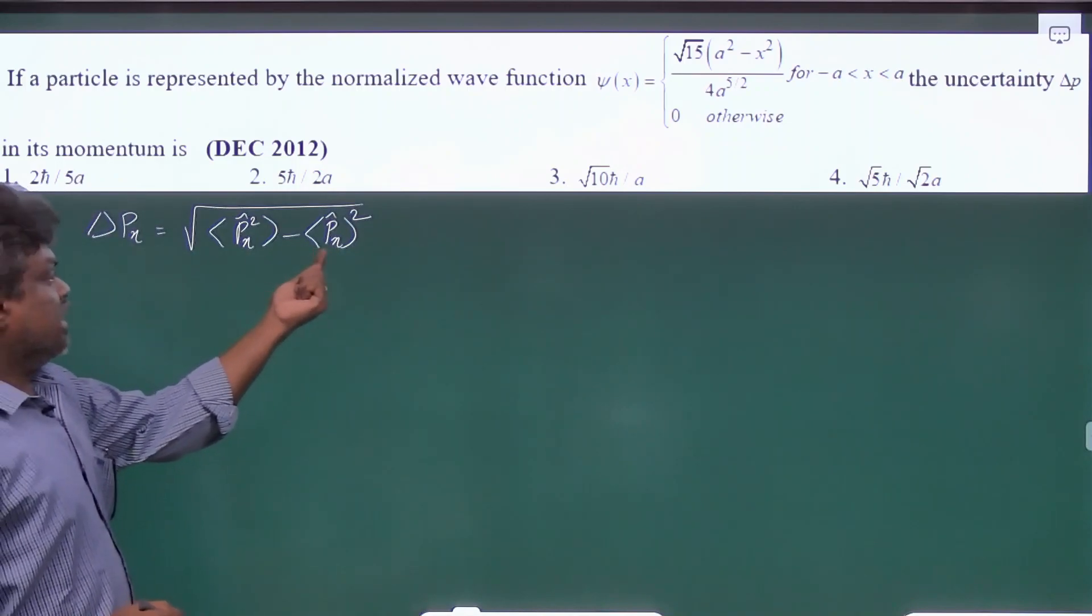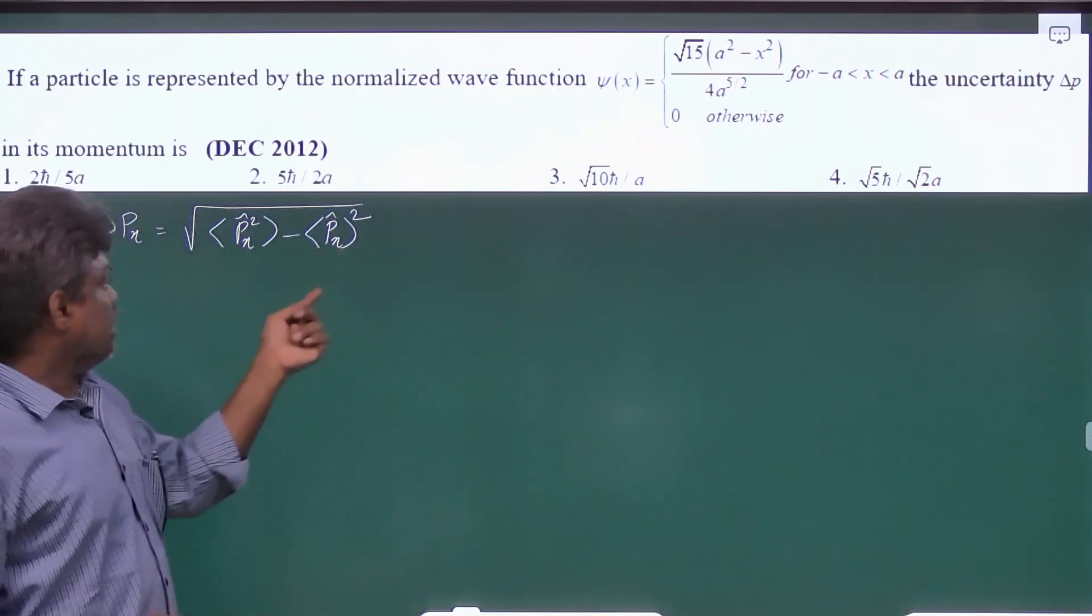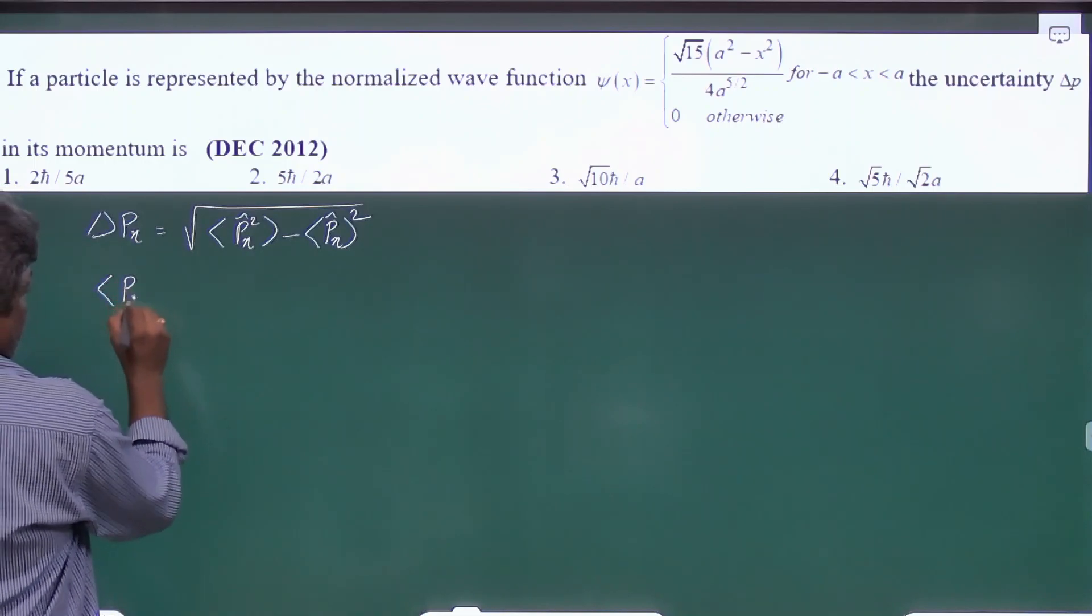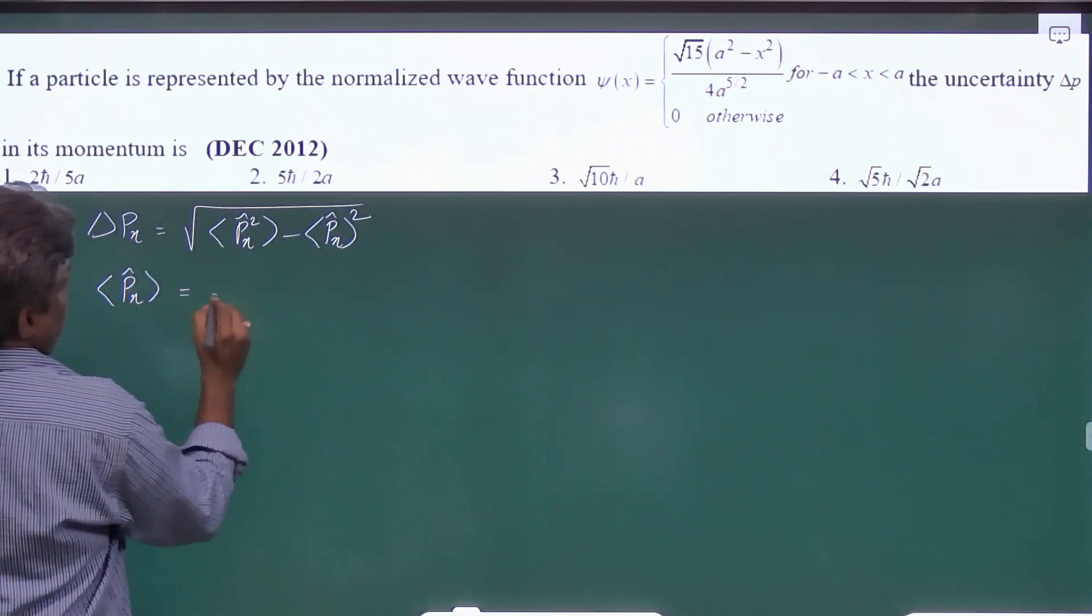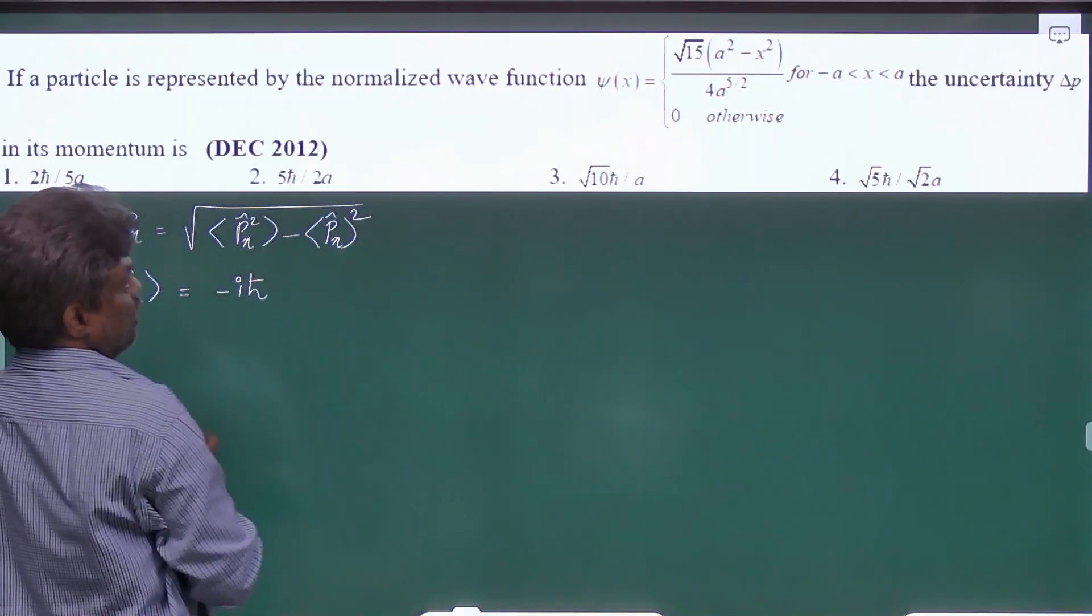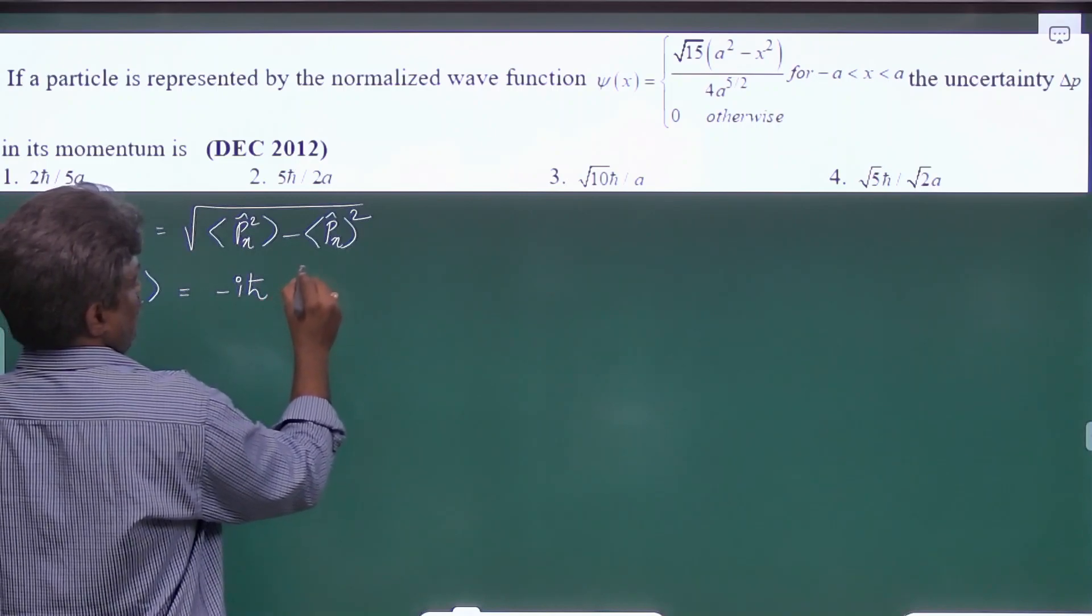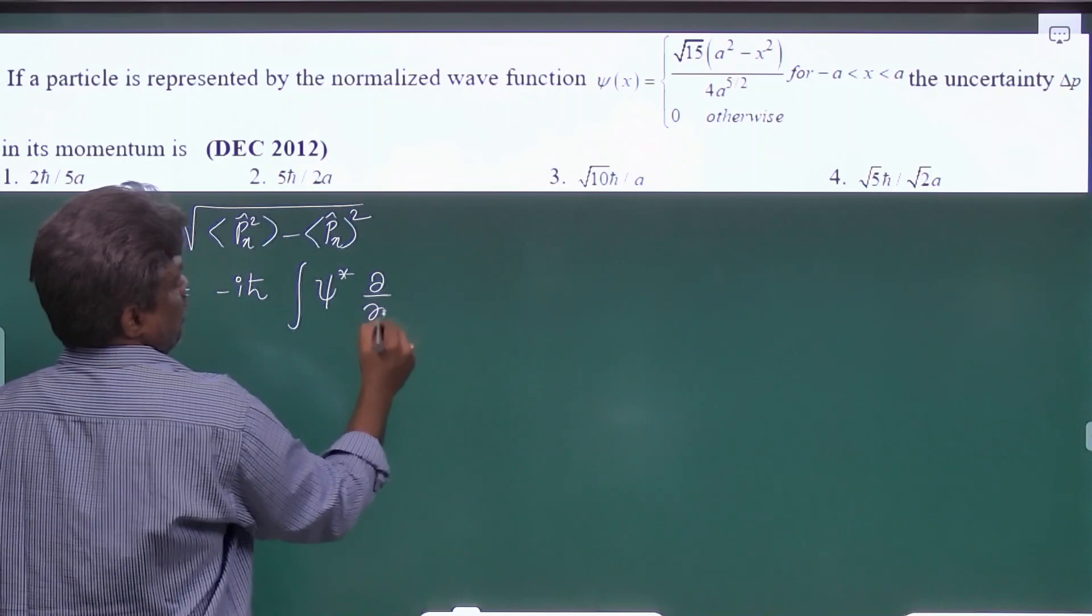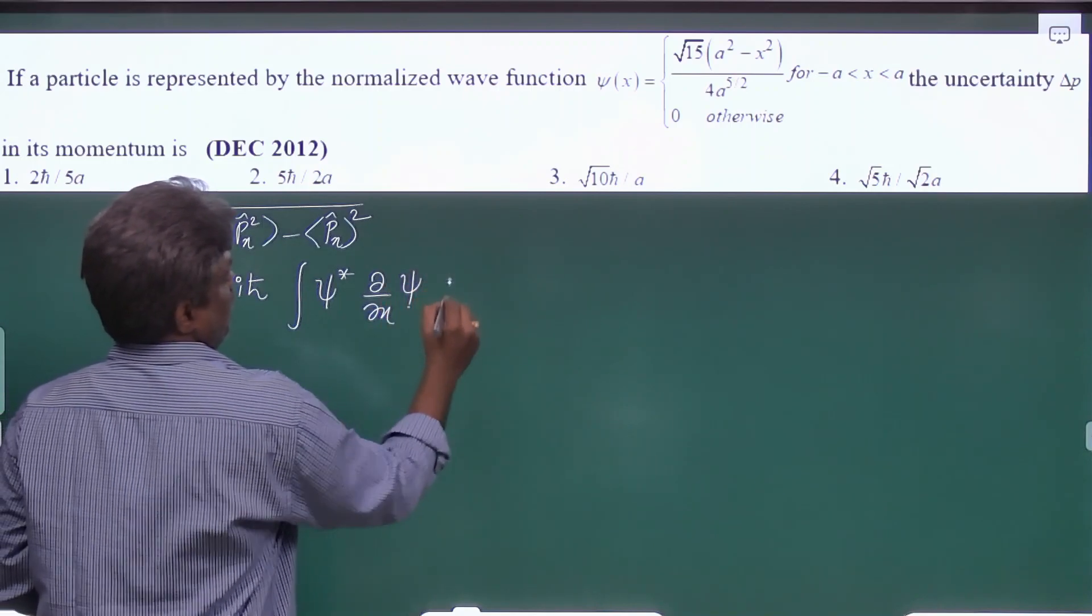So first let us find the average value of px and after that average value of px square. So average value of px is minus ih cross and here we will get integral psi star d psi by dx into psi dx.